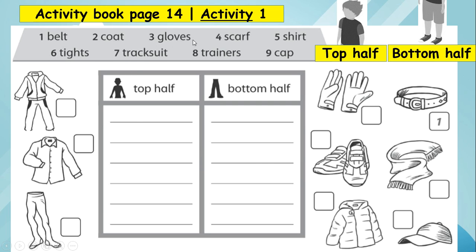Now everybody, let's go to our activity books, page 14, activity one. We have to classify the items according to the place where you wear them — some clothes go on the top half of your body, some on the bottom half. Number one: belt — where do you use a belt? The bottom half, right. Number two: coat — where do you use a coat? The top half.